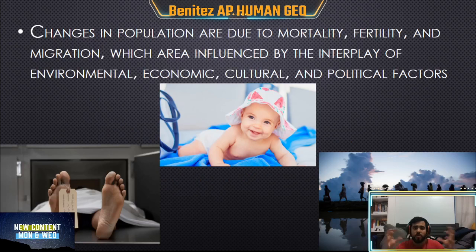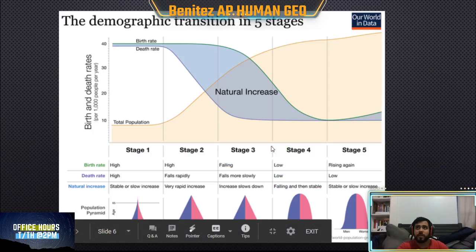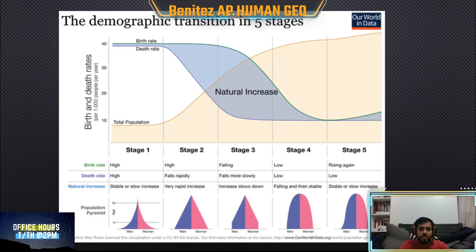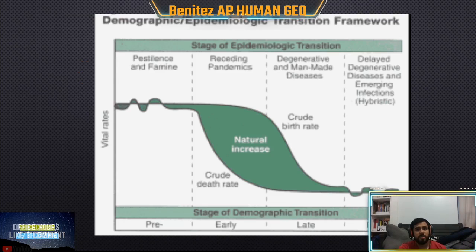Populations grow and change because of mortality — people dying — fertility — making more babies — and migration — how many people are moving into or leaving a country. This right here is the Demographic Transition Model. It tracks how countries start from stage one, the least advanced, and grow more economically and industrially until reaching stage five, the most advanced stage. We'll be going over what each stage means. The Epidemiological Model tracks death changes through pre, early, late, and post stages.